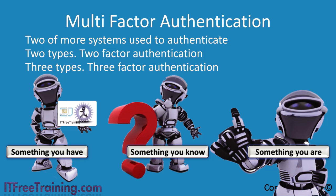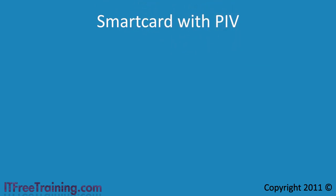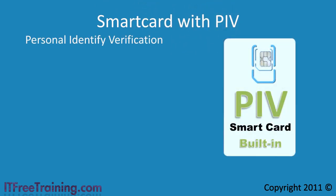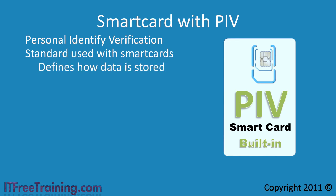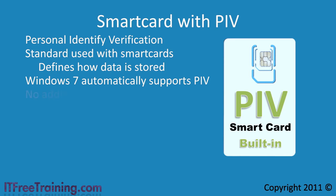In Microsoft documentation and in the exam, you may see the term smart card with PIV. PIV stands for Personal Identification Verification. PIV is simply a standard that is used with smart cards. The standard defines how to store information on the smart card, such as cryptographic key sizes. If you use a PIV smart card, Windows 7 will automatically download additional drivers if required from Windows Update. No additional software is required from the vendor or Windows to use a PIV smart card. If you use a smart card system that does not support PIV, you may need to install additional software in order to get the smart card to work.